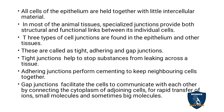Gap junctions create a gap between two cells to allow them to communicate with each other — similar to how people communicate through phones. The cytoplasm of adjoining cells is connected through these gap junctions, allowing rapid transfer of ions, small molecules, and sometimes larger molecules. These three junctions are important in all epithelial cells, both simple and compound.